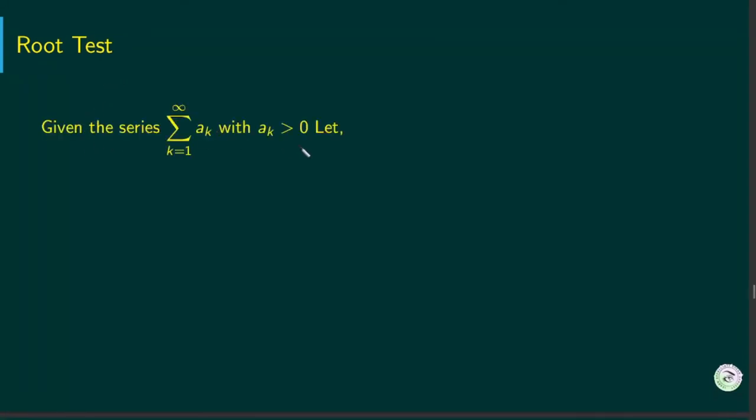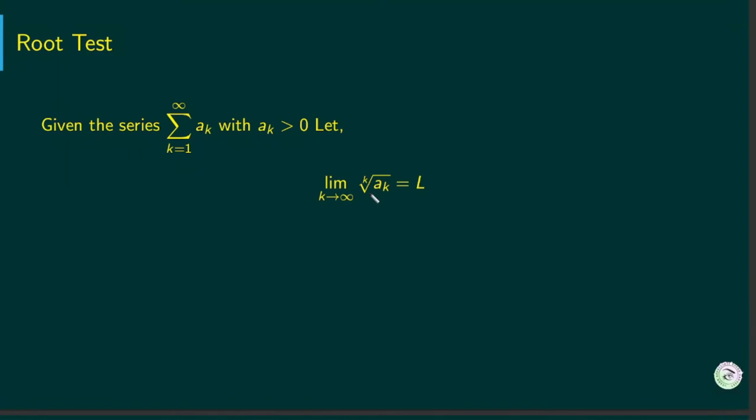Given a series of positive numbers, we let this limit be L. We are taking the kth root of ak and then taking the limit. This is L.